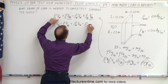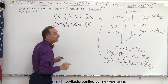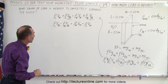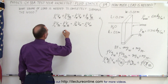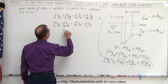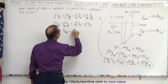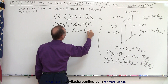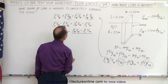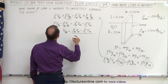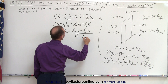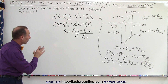Rearranging, we move the lead volume terms to one side: density of the liquid times volume of the lead minus density of the lead times volume of the lead equals density of the wood times volume of the wood minus density of the liquid times volume of the wood. Both quantities on the right are negative since the lead density is larger, but two negatives give a positive. So the volume of the lead equals (density of the wood minus density of the liquid) times volume of the wood, divided by (density of the liquid minus density of the lead).